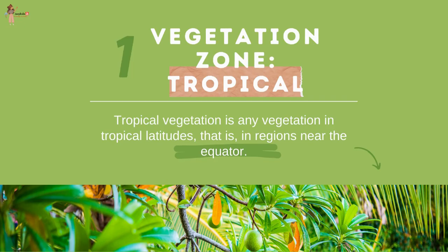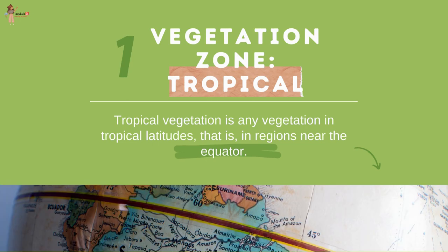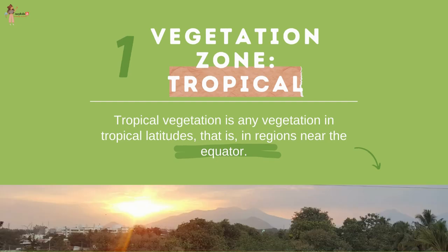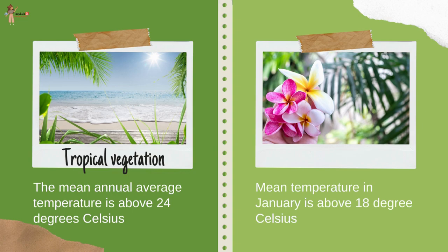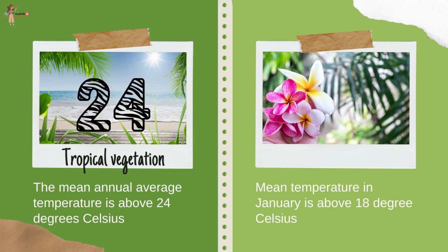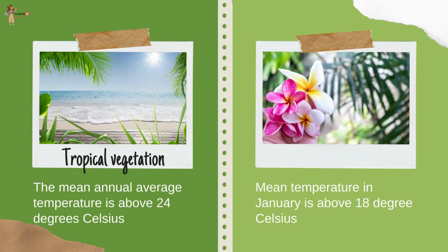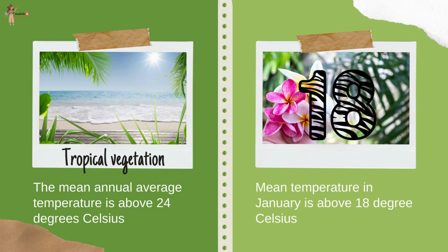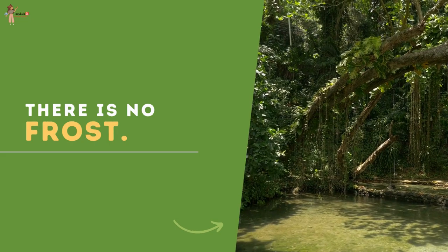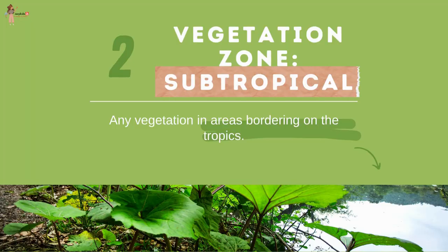Tropical vegetation is any vegetation in tropical latitudes, that is, in regions near the equator. The mean annual average temperature is above 24 degrees Celsius, the mean temperature in January is above 18 degrees Celsius, and there is no frost.